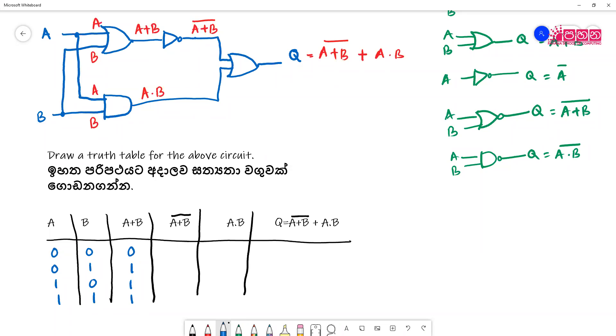Then we know A plus B bar is the opposite, complement. So if it is one then this becomes zero, so we will have one, zero, zero, zero.